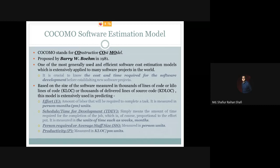Why do we need a software estimation model? Because it is crucial to know the time for the software development. That is why software estimation models are very important. Among the existing software estimation models, the most generally used and most efficient one is the COCOMO software estimation model, which stands for the Constructive Cost Model.